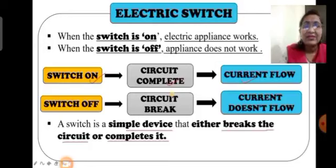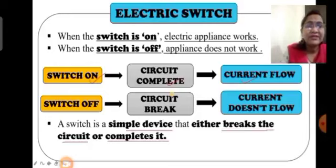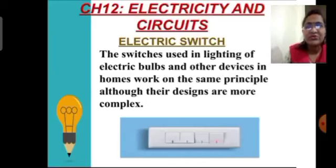We can conclude that when the switch is on, the circuit is completed, current will flow, and the bulb will glow. When the switch is off, the circuit is incomplete — there is a break — and current will not flow, so the bulb will not glow. In short, a switch is a simple device that either breaks or completes the circuit. The same principle applies to switches at home, though their design is more complex.